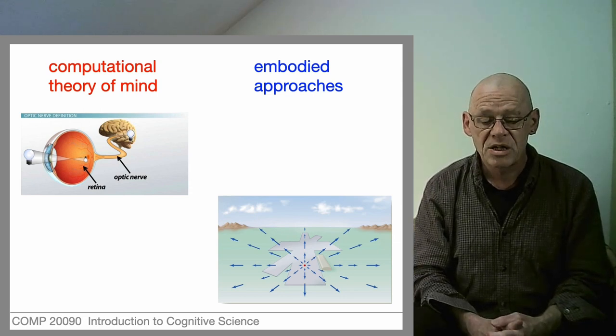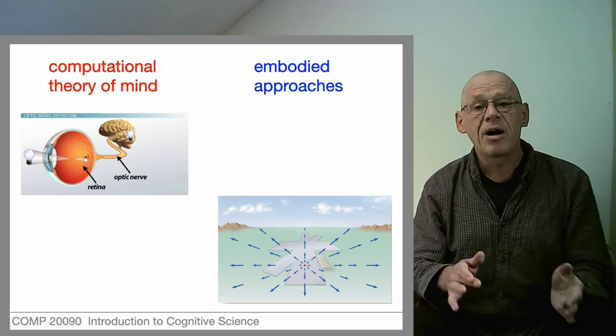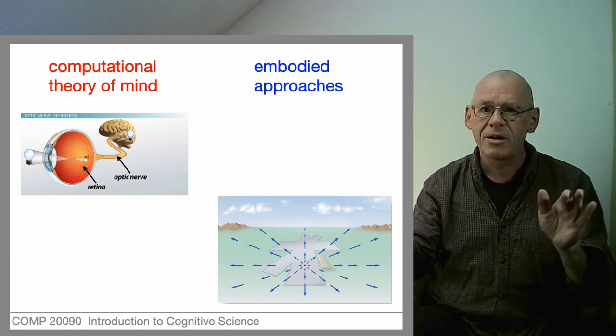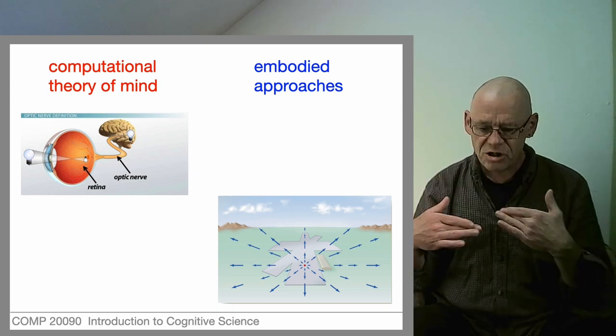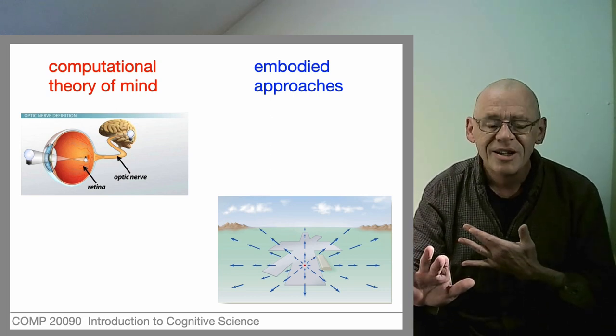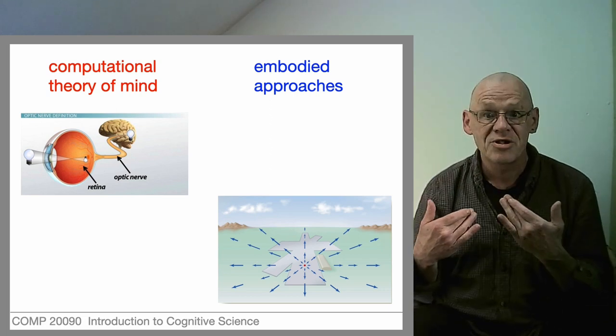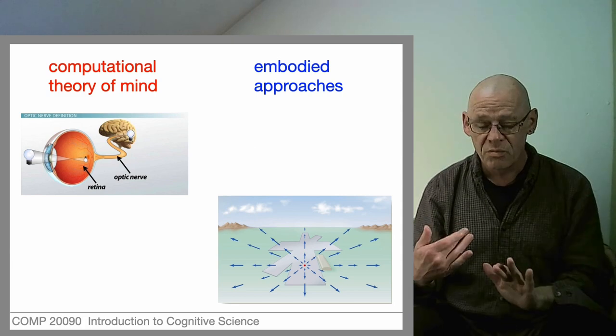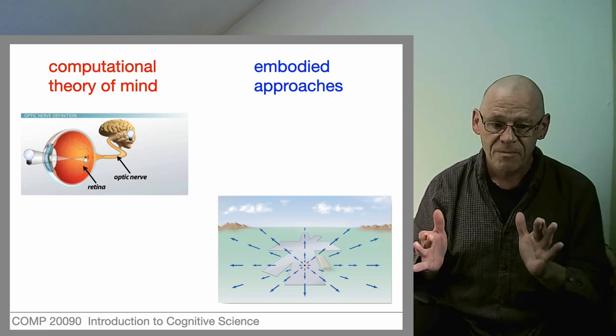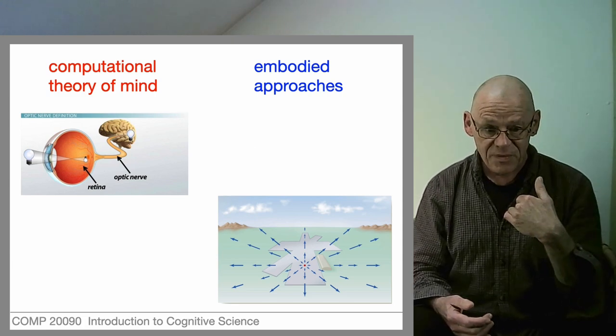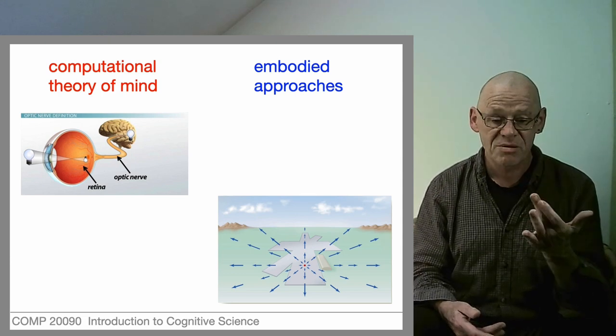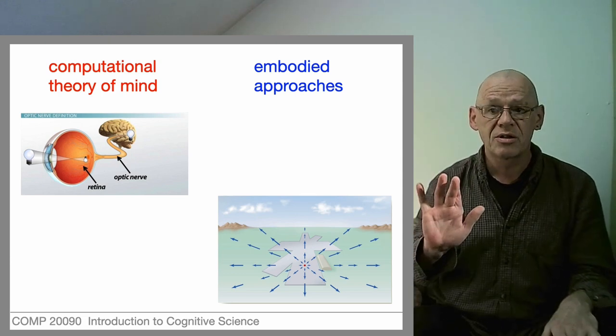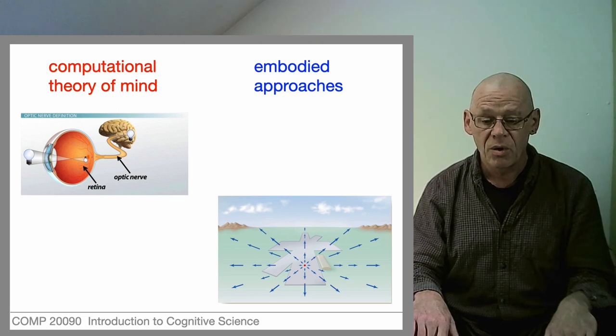Embodied theories of mind don't look into the brain - they look at the relationship between the body and the world to see how the pattern of change on the retina is influenced by one's own movement and by things moving in the world. So one looks in to a computational representational space, one looks out and looks at the relation between the body and the world.